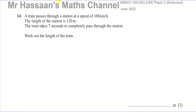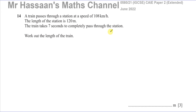Straight away there are a few issues we have to be very careful about, and one is the units. The speed is given in kilometers per hour, the length of the station is given in meters, and the time it takes for the train to complete this journey is given in seconds — so they are all incompatible with each other.